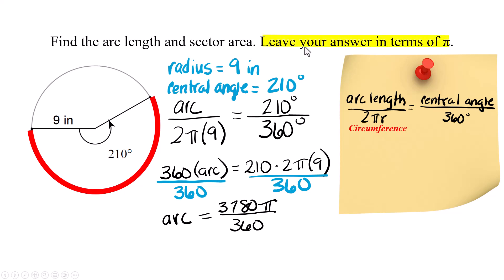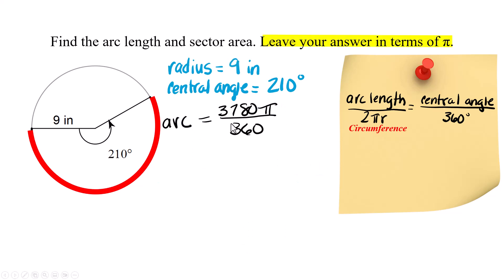It said to leave your answer in terms of π. So that means π needs to be in your answer and usually these answers are given as a fraction times π. I need to reduce this and just this the number part of this I can reduce this.